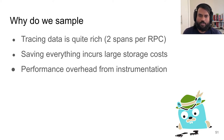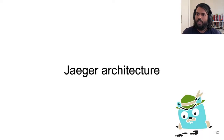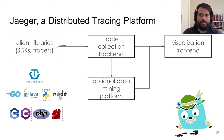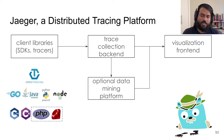Once a trace is decided to be not sampled, no additional data is collected. In the Jaeger architecture, there are client libraries — SDKs available in multiple languages. Jaeger conforms to the OpenTracing standard and supports instrumentation in Go, Java, Python, and others. These client libraries generate spans, which go to the trace collection backend. The visualization frontend retrieves these spans and visualizes them as traces, including the Gantt chart view and the dependency view.